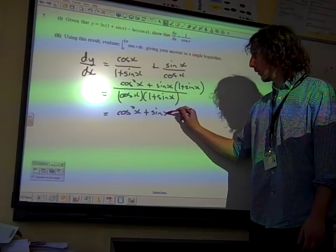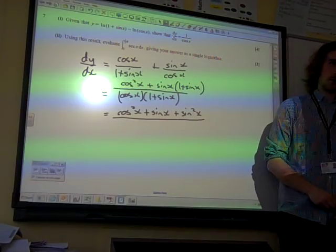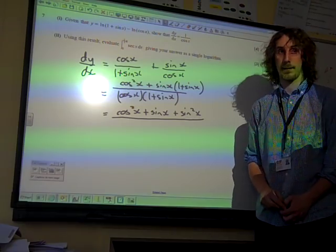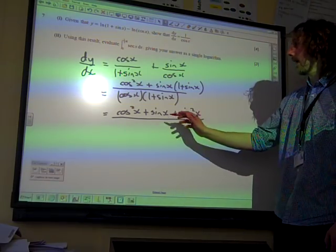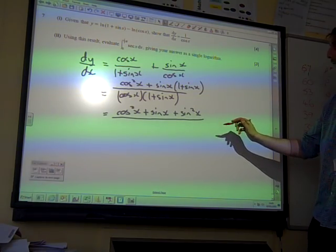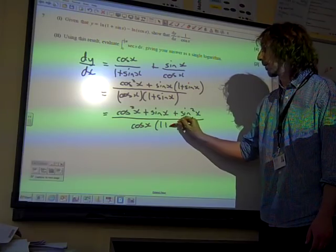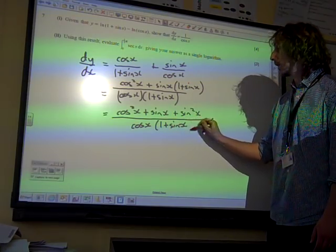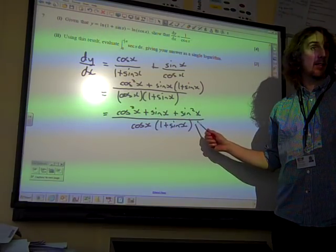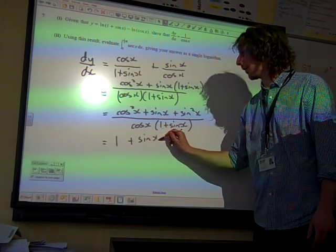Let's leave it like this, cos x times 1 plus sine x. The top line there, we've got to recognize that cos squared plus sine squared x gives us 1. So that top line is 1 plus sine x.